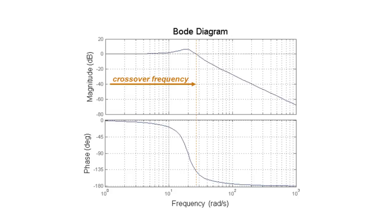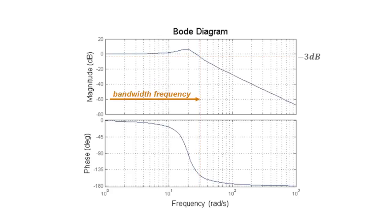The point where that change happens is defined as the crossover frequency. The last important characteristic I wanted to bring up is what is called bandwidth frequency. This is usually defined at the point where the magnitude crosses minus three dBs.